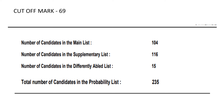Number of candidates in the main list is 104. Number of candidates in the supplemental list is 35. Number of candidates in the differently abled list is 15. Total number of candidates in the probability list is 235.